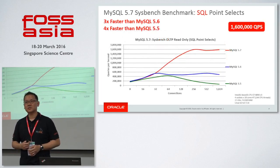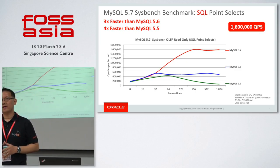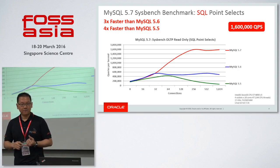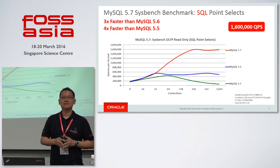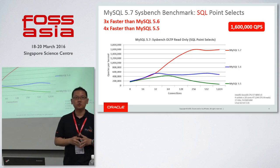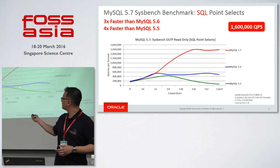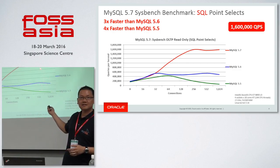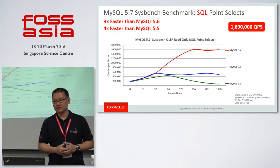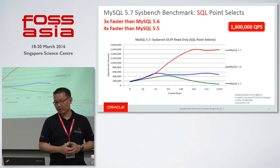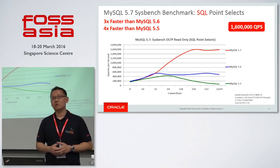Now, talking about performance — this is one of the benchmarks we did for 5.5, 5.6, and 5.7. As you can see, the difference in speed and performance is huge. This is a benchmark on SQL point selects. MySQL 5.7 is reaching 1.6 million QPS on a 4-socket, 18-core machine, which is 72 cores total.